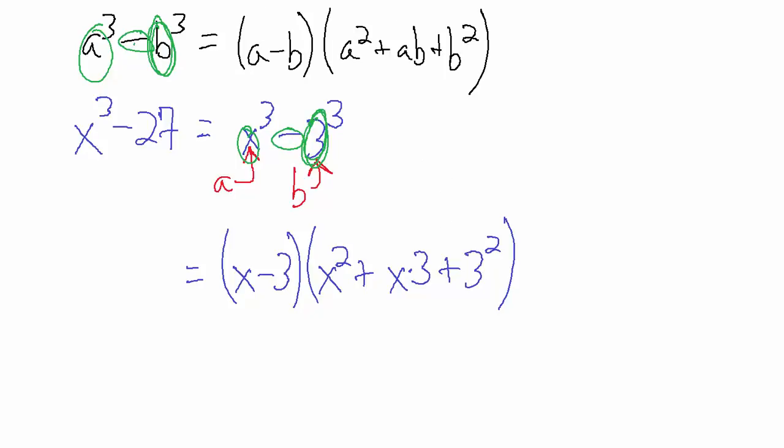So anyway, continuing, we get x minus 3, that quantity multiplied by the quantity - what? Well, x squared is just x squared, x times 3 is commonly written as 3x, and then plus 3 squared means plus 9.